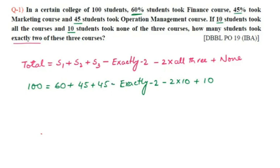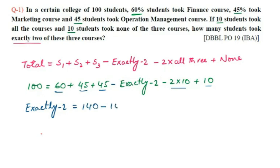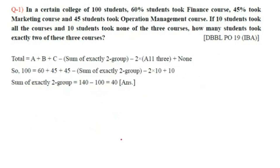Solving for exactly two: 60 + 45 + 45 = 150, plus none (10) = 160. Then 160 minus 2×10 = 160 minus 20 = 140. So exactly two = 140 − 100 = 40. The answer is 40 students took exactly two of the three courses.